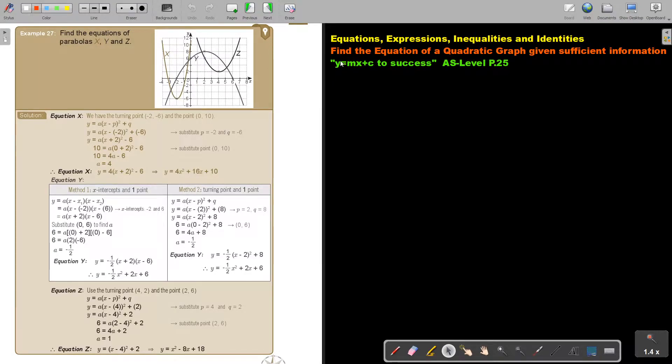In this video, we are going to continue with finding the equation of a quadratic graph given sufficient information. You will find this on page 25 in the Namibia AS level mathematics textbook y equals mx plus c to success.